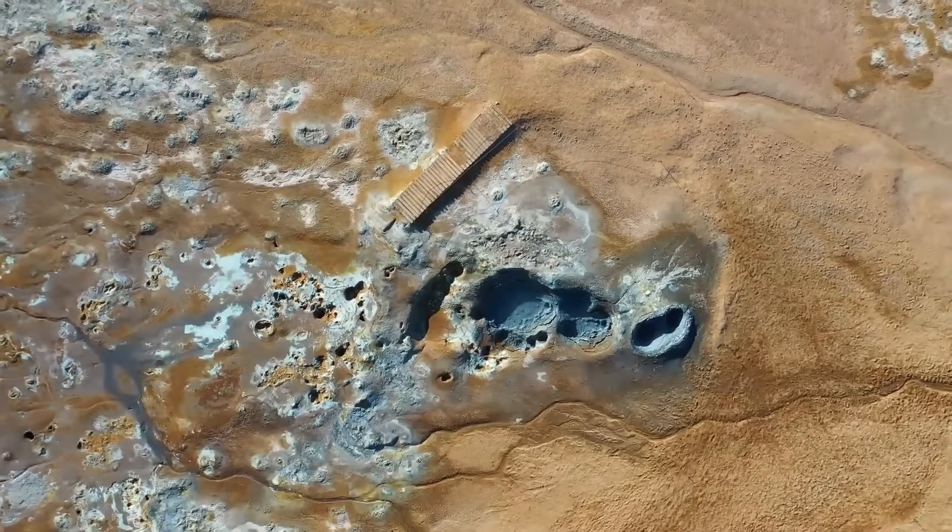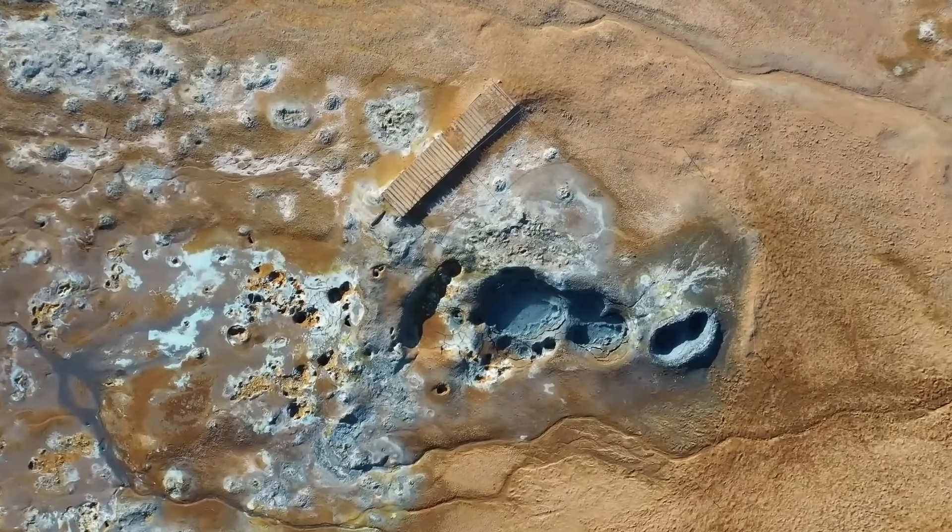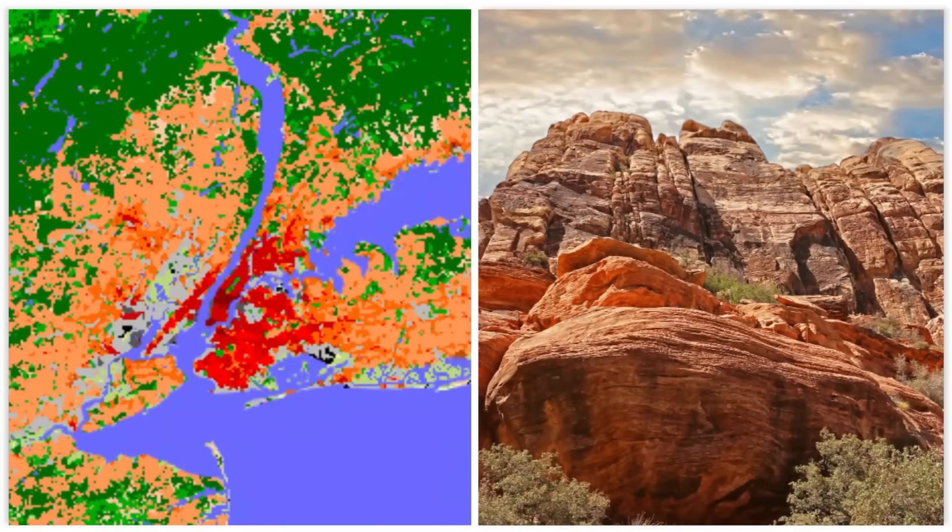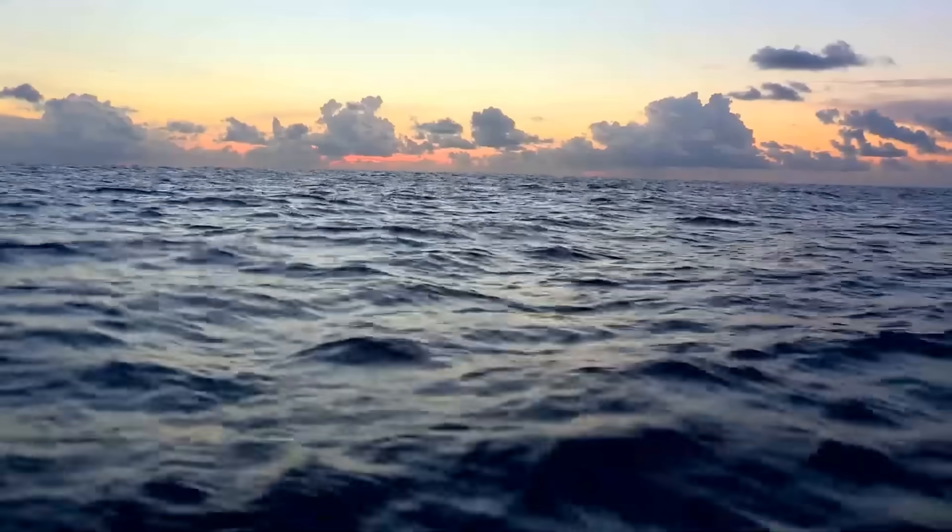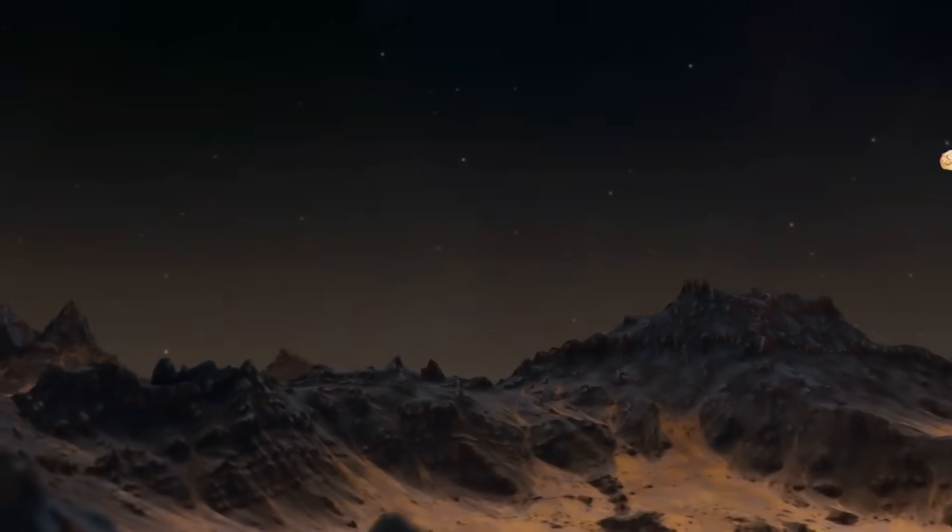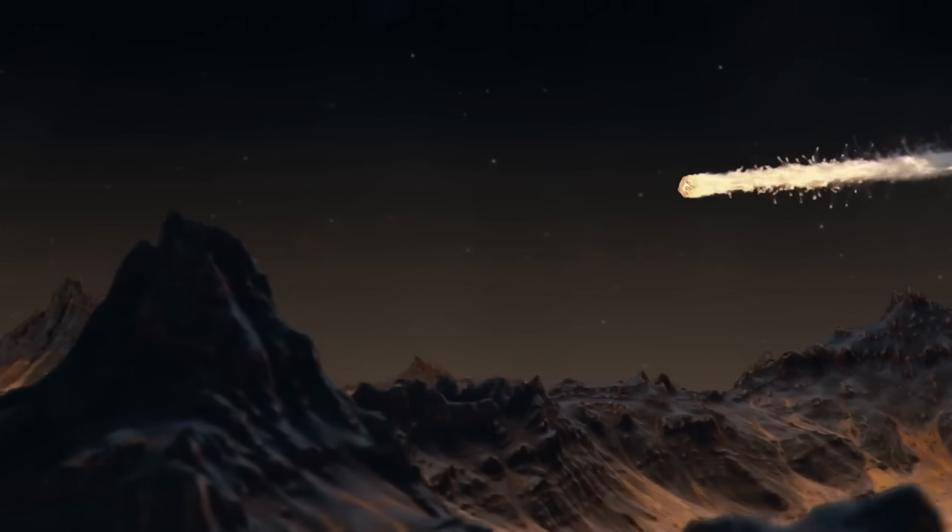This sudden injection of water into the Martian system, even if temporary, could have lingering effects on the local climate and geology. The thing nobody tells you is that this process mimics the very way Earth may have gotten its oceans, through a relentless bombardment of icy comets in its youth.